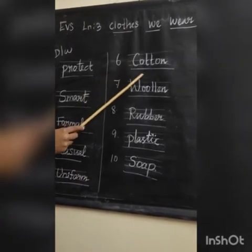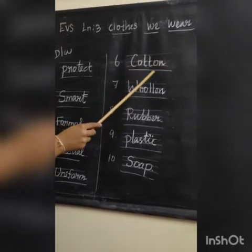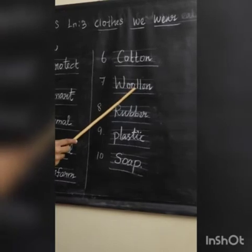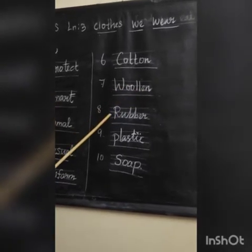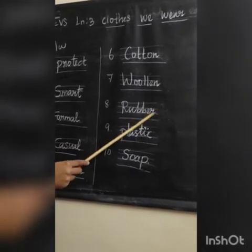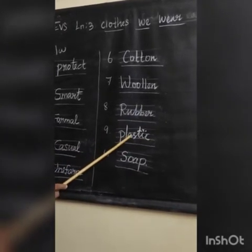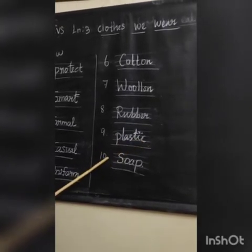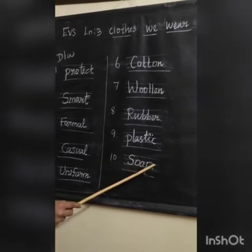Sixth one: cotton, C-O-T-T-O-N, cotton. Seventh one: woolen, W-O-O-L-L-E-N, woolen. Eighth one: rubber, R-U-B-B-E-R, rubber. Ninth one: plastic, P-L-A-S-T-I-C, plastic. Tenth one: soap, S-O-A-P, soap.